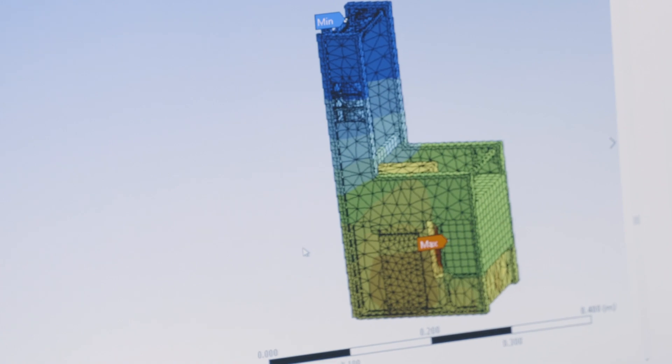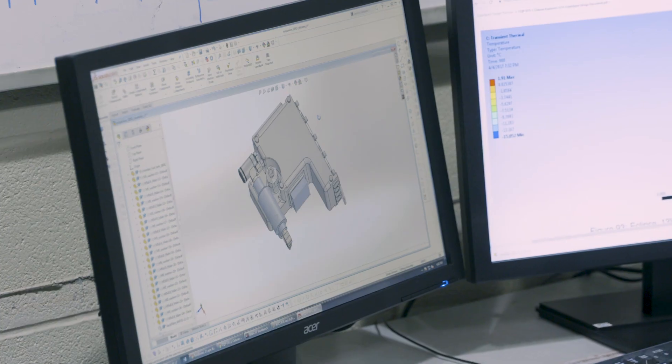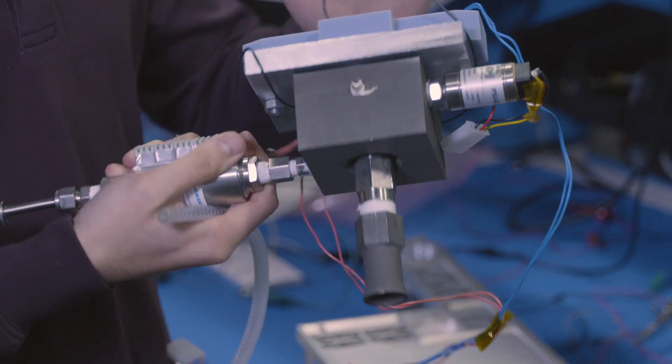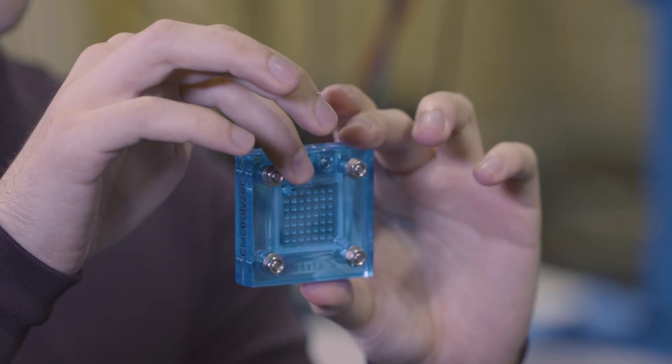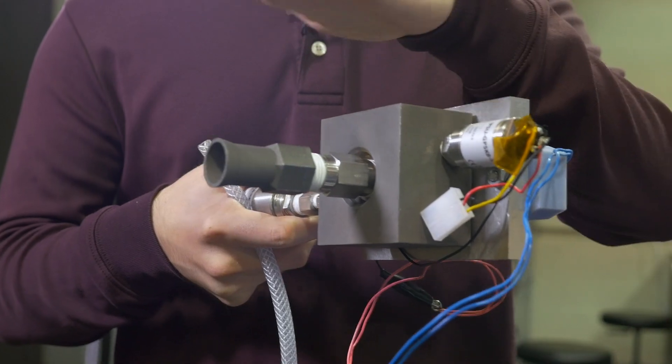We're developing two new technologies mainly for this mission. This is where our main thruster is. One is a water electrolysis propulsion thruster. We convert the water slowly into a hydrogen oxygen mixture, then combust that gas mixture to generate our main thrust.